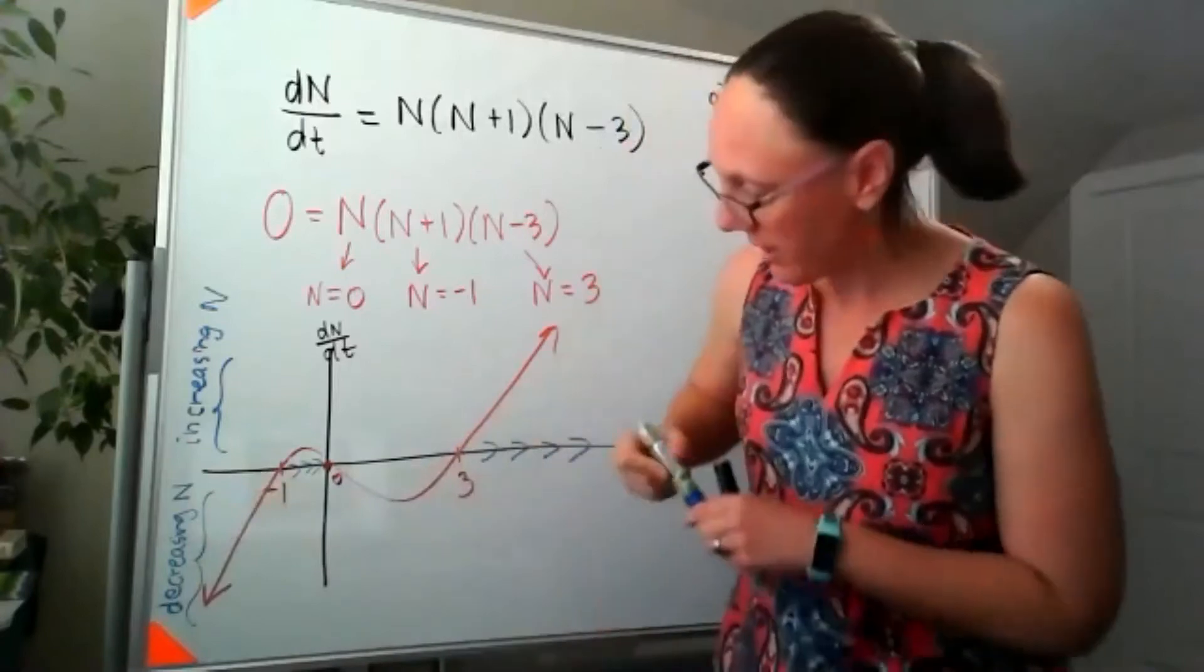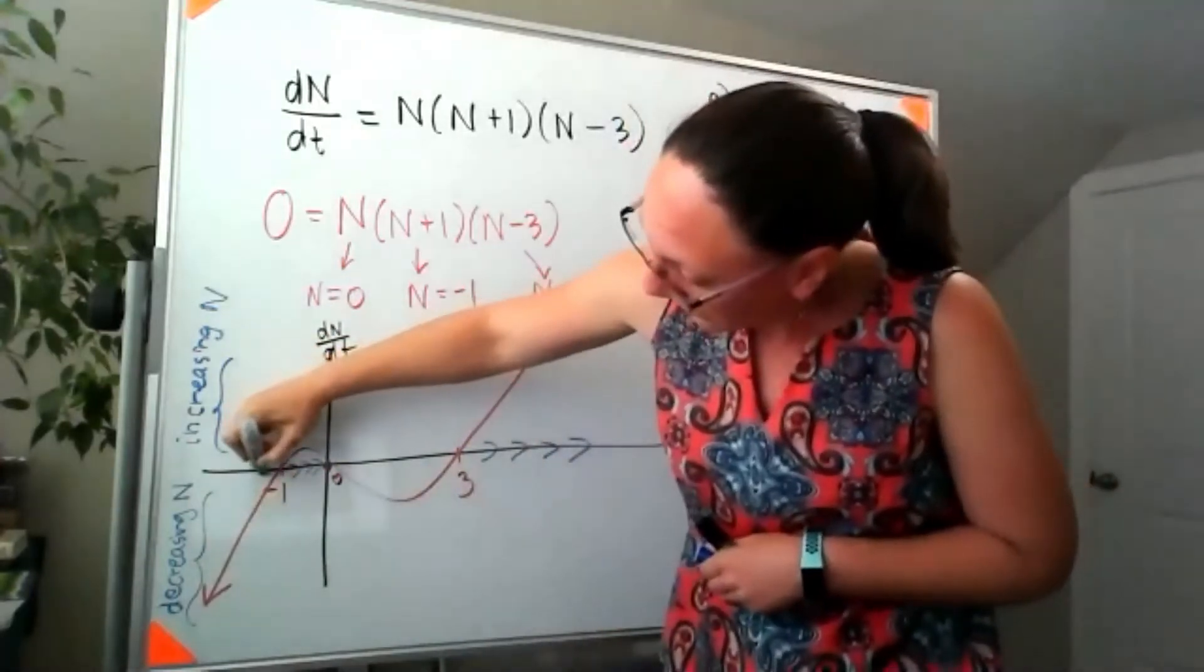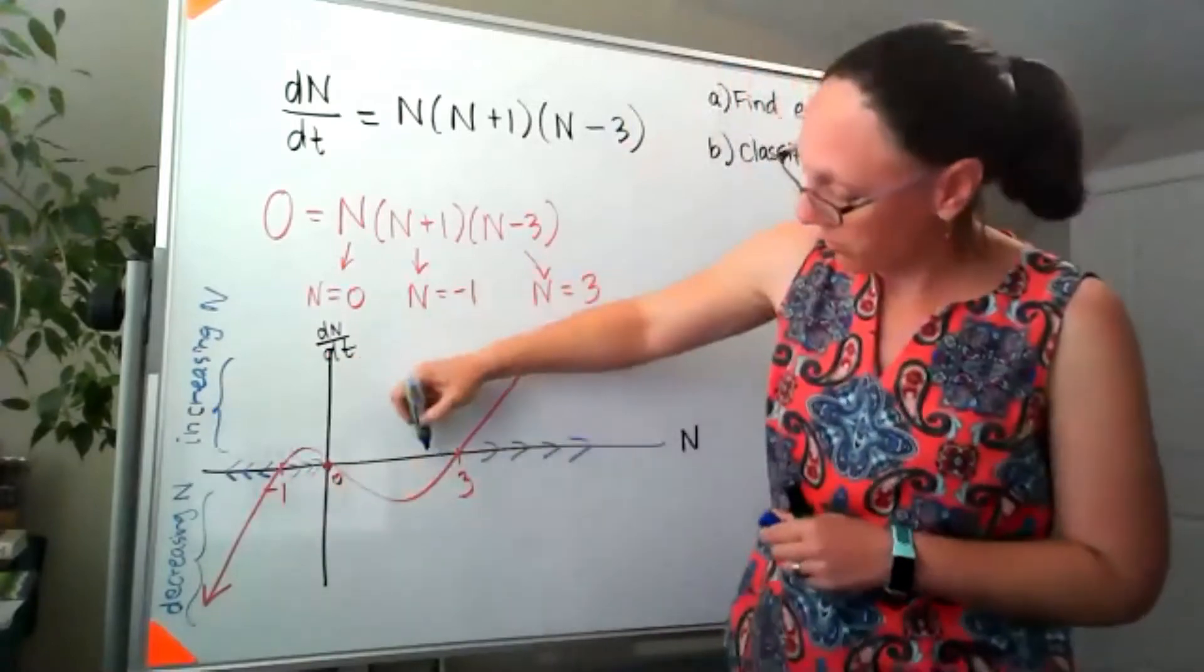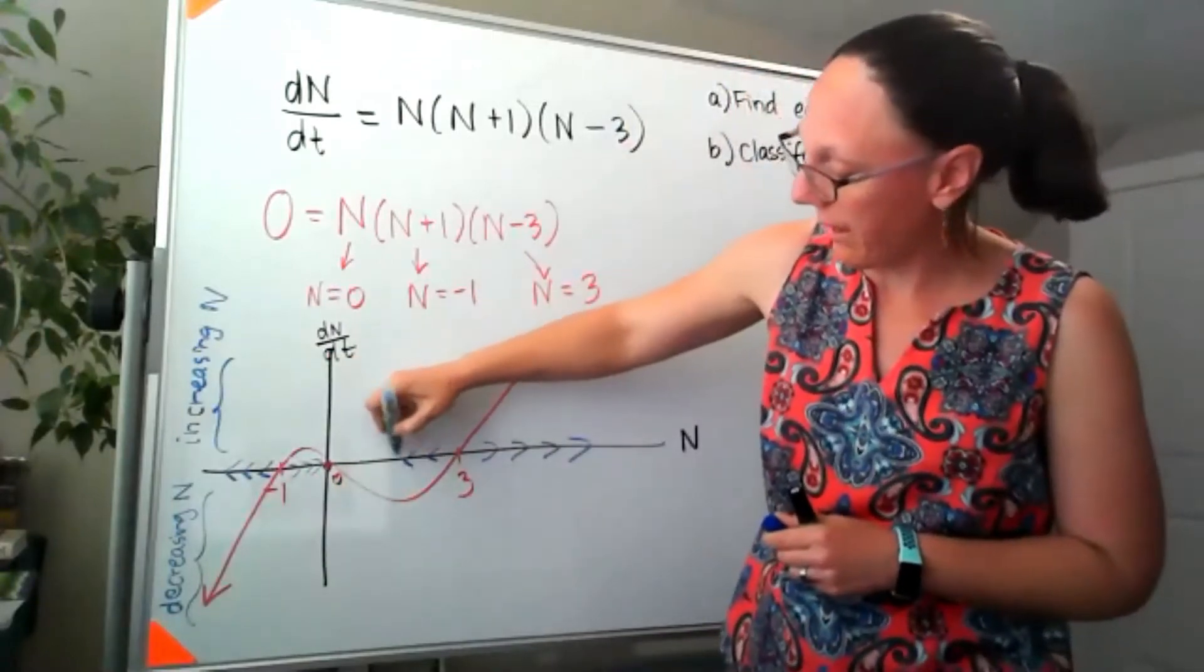So out here, I've been moving towards smaller n values. And also in this section, I'd be moving towards smaller n values.